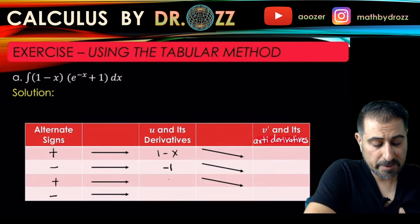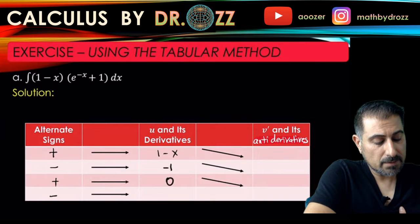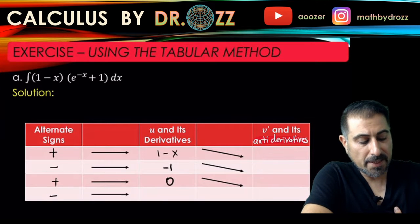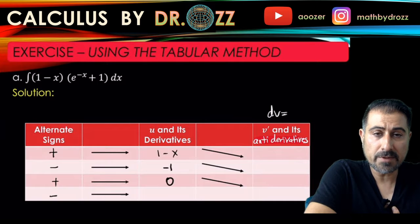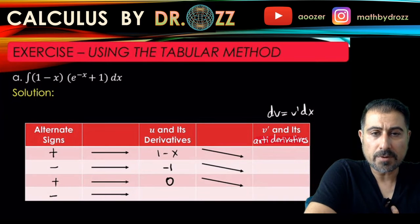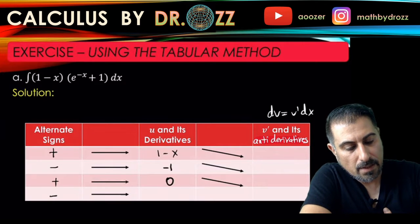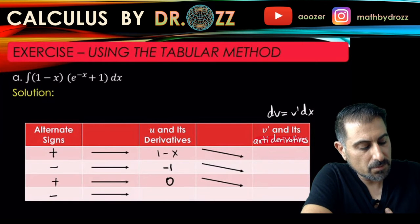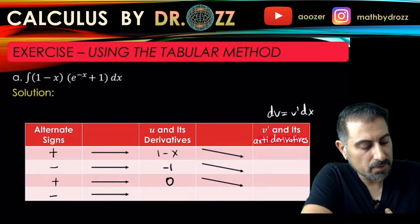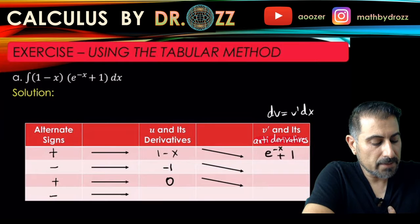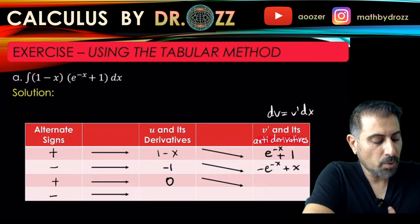This part here is related to dv/dx, so we're going to look at the antiderivatives of the dv terms. This is going to be e to the minus x plus 1. We're going to integrate this, so minus e to the minus x plus x, and then one more time e to the minus x plus x squared over 2.